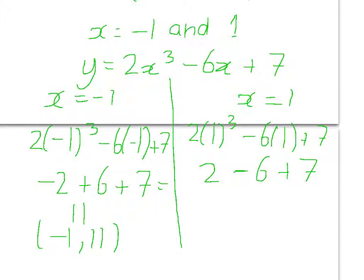So, that's minus 4 plus 7, which is 3. So that's equal to 3. So this coordinate is 1, 3.